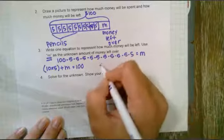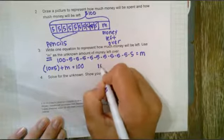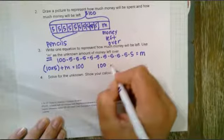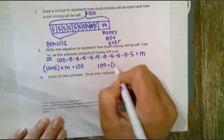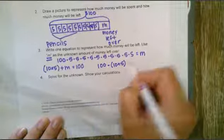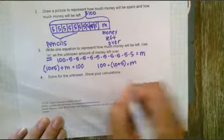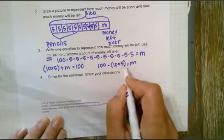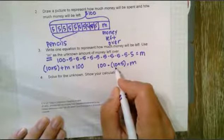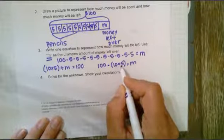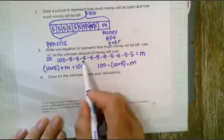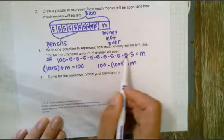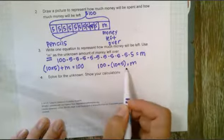And then finally you might decide to do something like one hundred, my starting number, minus 10 times 5, my boxes of pencils, equals m. That is the same thing that I did up here. I just simplified it by representing my boxes of pencils by 10 times 5. Remember one, two, three, four, five, six, seven, eight, nine, ten - ten groups of five equals m.